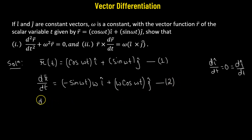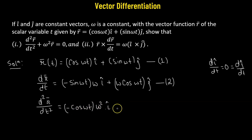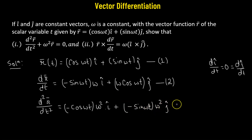Next, we take the derivative of equation 2 with respect to t to get the second derivative of r. Differentiating -ω sin(ωt) gives -ω² cos(ωt), and differentiating ω cos(ωt) gives -ω² sin(ωt). So the second derivative of r is -ω² cos(ωt)î - ω² sin(ωt)ĵ. Label this equation 3.